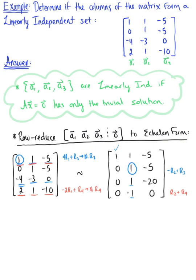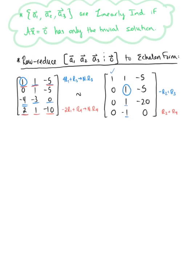The equivalent matrix: the first two rows remain as 1, 1, negative 5 and 0, 1, negative 5. For the third row: 0 plus 0 is 0; negative 1 plus 1 is 0; and positive 5 minus 20 gives negative 15. For the fourth row: 0 plus 0 is 0; 1 minus 1 is 0; and negative 5 plus 0 gives negative 5.